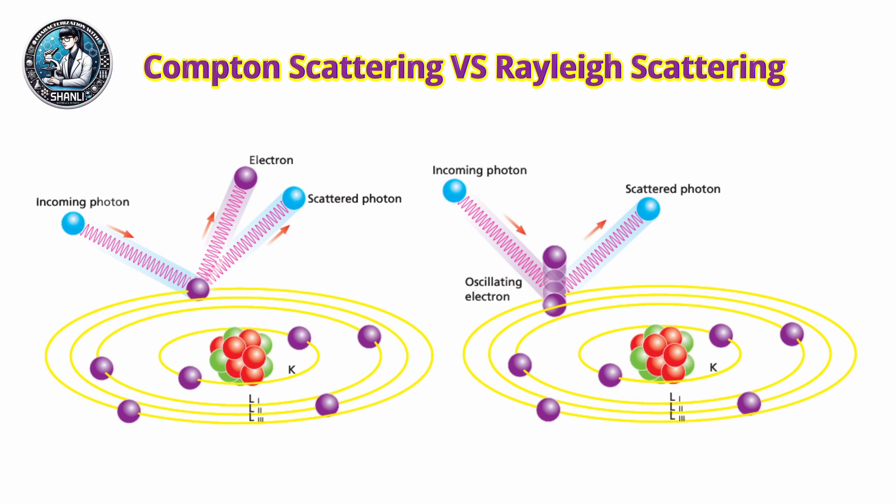The atom then emits radiation at the same energy as the incoming X-ray. Since no energy is lost, this process is also called coherent scattering and it gives the appearance of simple reflection.